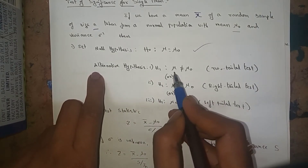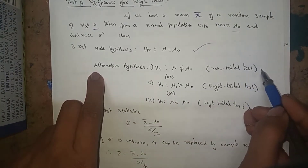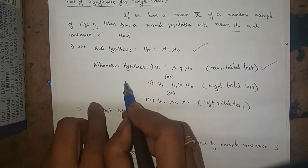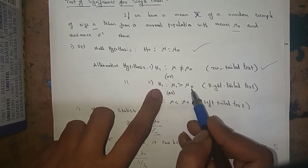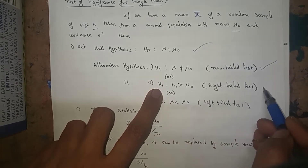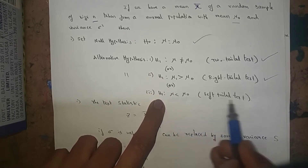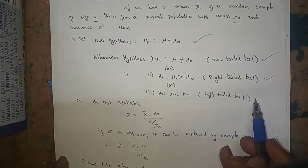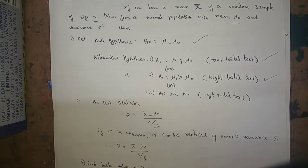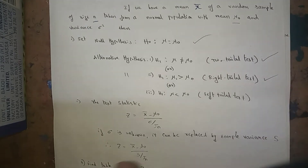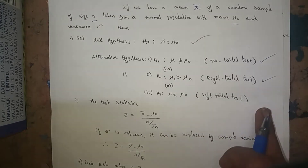If mu ≠ mu naught, it is called a two-tailed test. If mu > mu naught, it is a right-tailed test. If mu < mu naught, it is called a left-tailed test. In the alternative hypothesis, we can define these three types of tests.